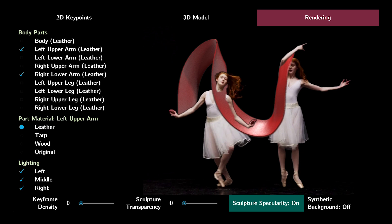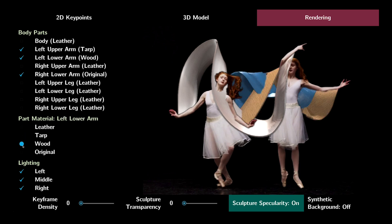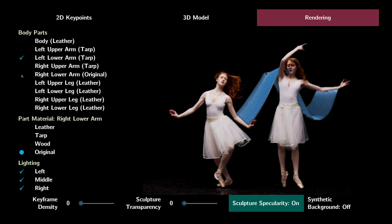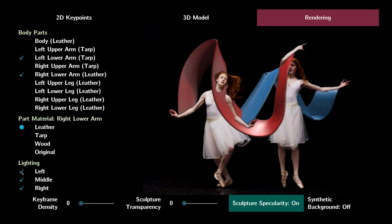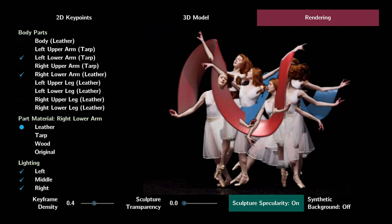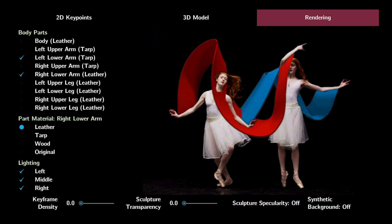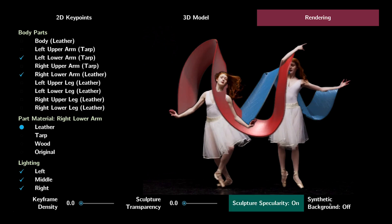MoleSculpt offers users the flexibility of customizing their rendering. For example, the user can choose the body parts of interest to form the sculpture. One can also assign different materials to different body parts for better differentiation. Lighting is also customizable. The user can control how densely the keyframes get inserted, how transparent the sculpture is, whether the sculpture material is specular or matte, and whether to use a synthetic background for the rendering.